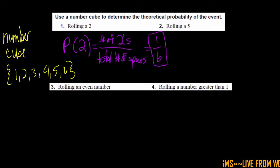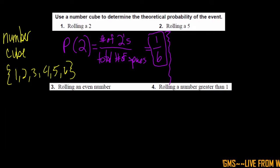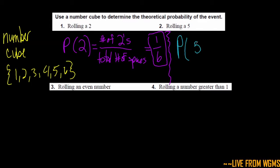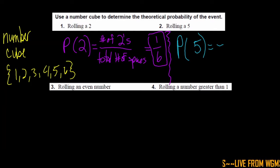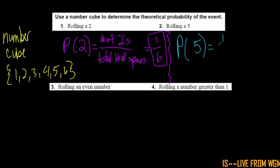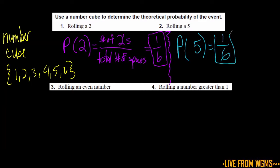Same kind of idea with rolling a five. The probability of rolling a five on that number cube — how many fives do I have? It's still going to be one over six. I would say it's the number of fives I have, which is one, over the total number of spaces, which is six.